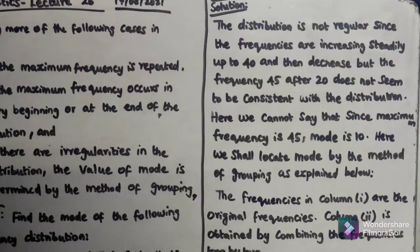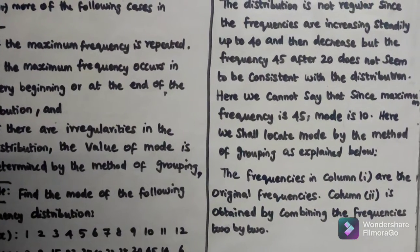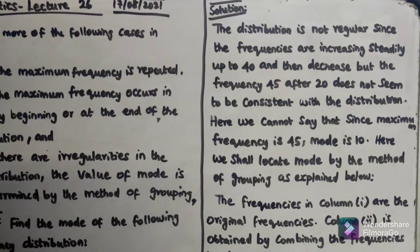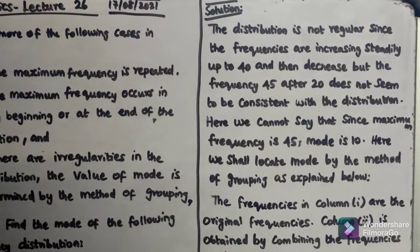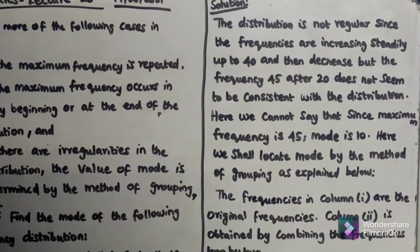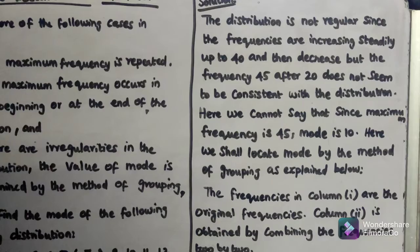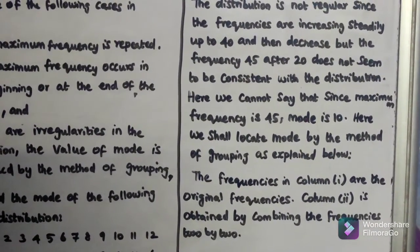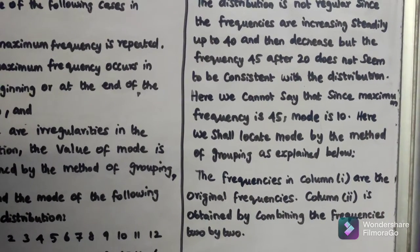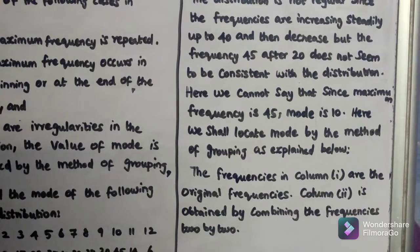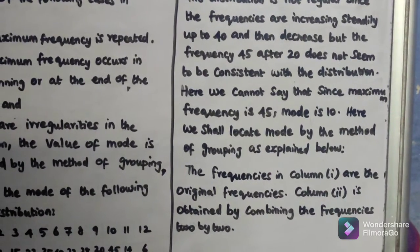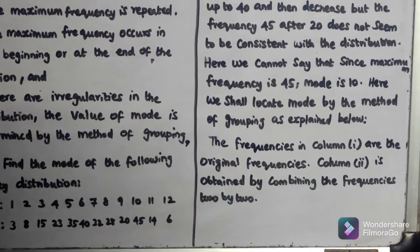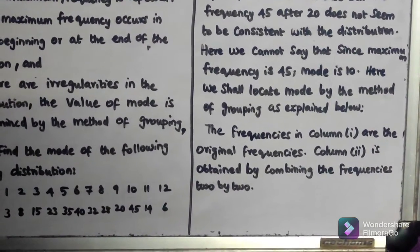What is the solution? The distribution is not regular. You can see that after a steady increase to 40, the frequency decreases, but then frequency 45 appears at position 10, followed by 20. So the distribution is not regular. Since the maximum frequency 45 is not sequential, we shall locate the mode by the method of grouping.